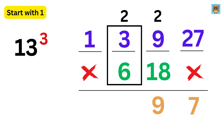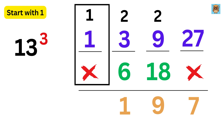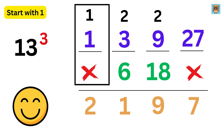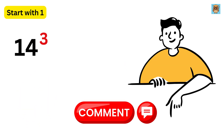Then 3 plus 6 is 9, add the carry 2 to get 11 — put 1 here and carry 1. Finally 1 plus 1 is 2. 13 cubed is 2197. Tell me in the comments what the value of 14 cubed will be!